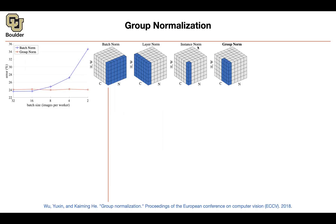There is instance normalization, where your statistics come from a batch size of one — from one instance. Because you have a height and width dimension, you can compute your mean and standard deviation. Without height and width, you're in trouble. The application of instance normalization is for generative adversarial neural networks — that's a technique for GANs, which we'll probably cover next semester.